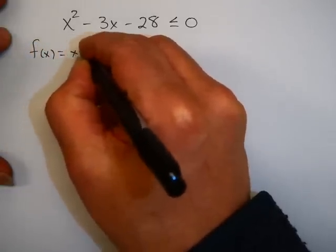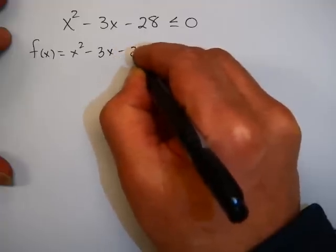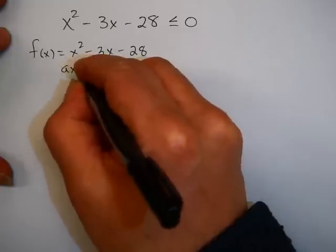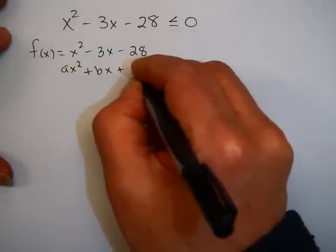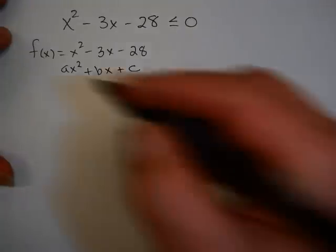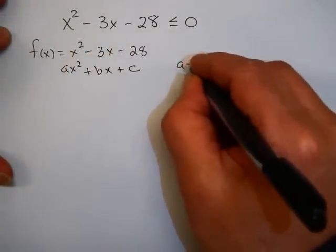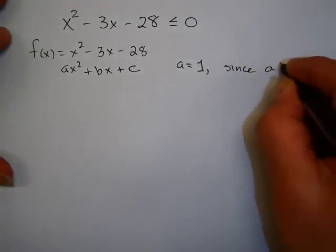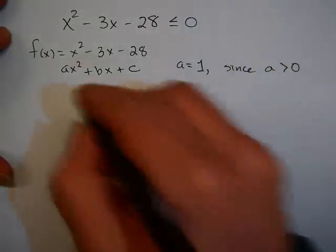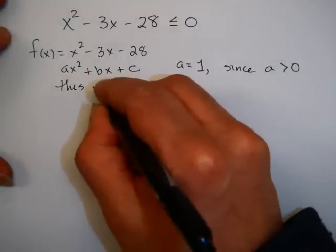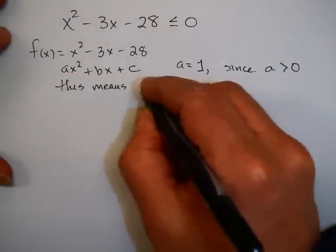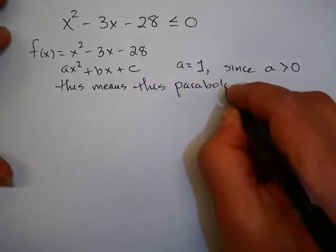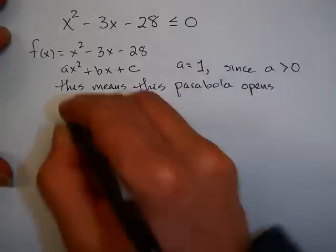Let's start with this problem: x² - 3x - 28 is less than or equal to 0. And I want you to think about the function f(x) = x² - 3x - 28. This is a quadratic function of the form ax² + bx + c. Now, notice that a here is equal to 1. Since a is greater than 0, this means this parabola opens up.